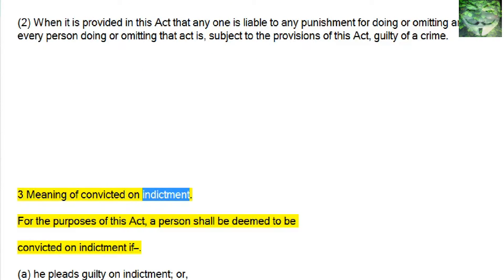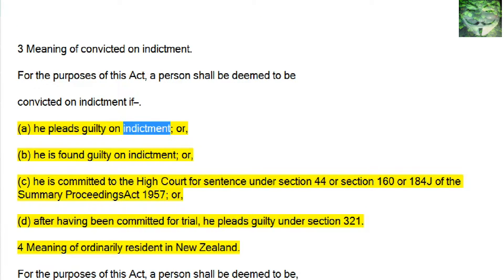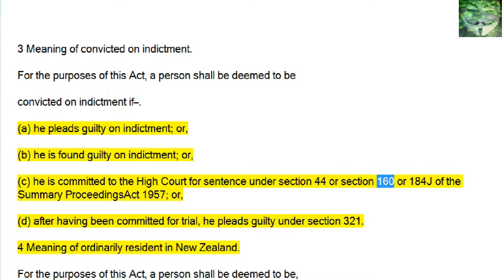Subsection 3 — Meaning of Convicted on Indictment. Subsection 4: for the purposes of this act, a person shall be deemed to be convicted on indictment if: a, he pleads guilty on indictment; or b, he is found guilty on indictment; or c, he is committed to the High Court for sentence under Section 44 or Section 160 or 184J of the Summary Proceedings Act 1957; or d, after having been committed for trial, he pleads guilty under Section 321.